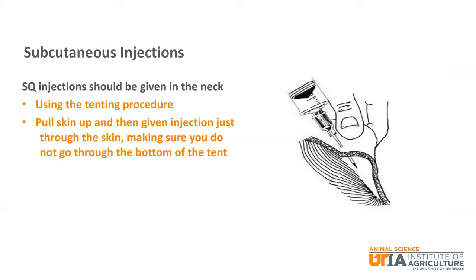One more important note on subcutaneous injections: they should be given using the tenting procedure. Basically, you pull the skin of the neck up, forming a tent with the skin. Then you give the injection just through the skin, making sure that you do not go through the bottom of the tent as well.